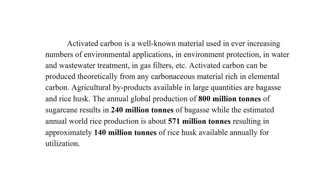Activated carbon is a well-known material used in an ever-increasing number of environmental applications, including environment protection, water and wastewater treatment, and gas filters. Activated carbon can be produced theoretically from any carbonaceous material rich in elemental carbon. Agricultural by-products available in large quantities include bagasse and rice husk. The annual global production of 800 million tons of sugarcane results in 240 million tons of bagasse, while the estimated annual world rice production is about 571 million tons, resulting in approximately 140 million tons of rice husk available annually for utilization.